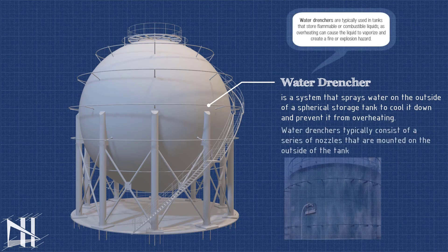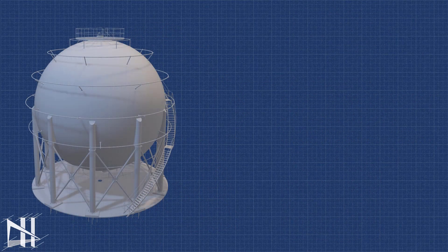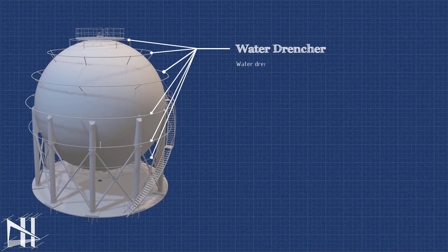Water drenchers work by spraying a fine mist of water onto the surface of the tank. This helps to cool the tank and prevent the fire from spreading. The water also helps to smother the fire by depriving it of oxygen.